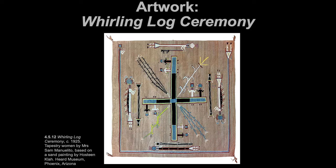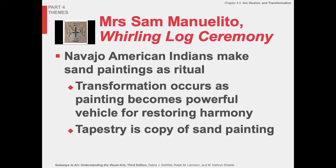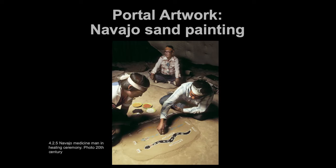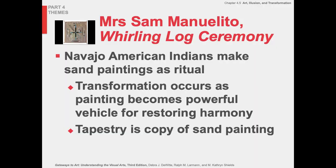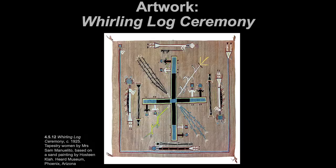The next work is the Whirling Log Ceremony from 1925 — a tapestry. If you remember our sand paintings from Chapter 4.2, Navajo Medicine Men used a very similar motif and style, with corn, different pigments, and so on. Sand paintings are transitional and temporary — they're a healing art. Somebody sits inside one, there's a ritual and ceremony, and then it's demolished.